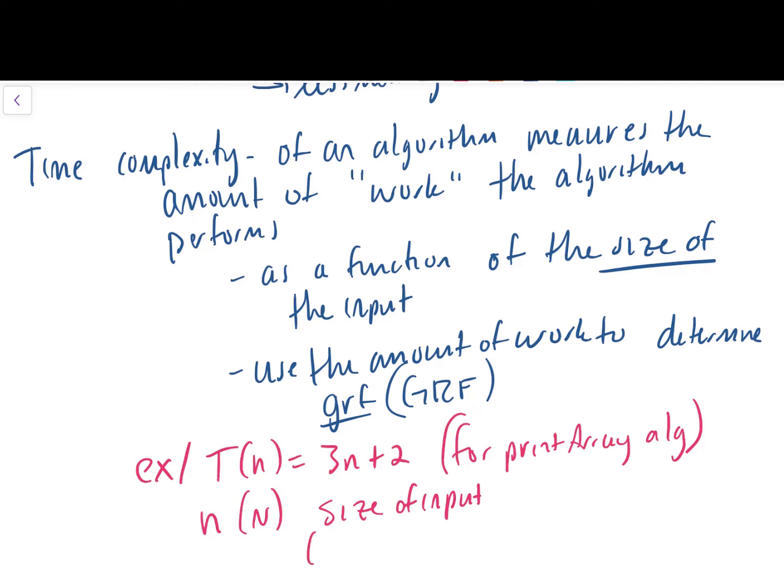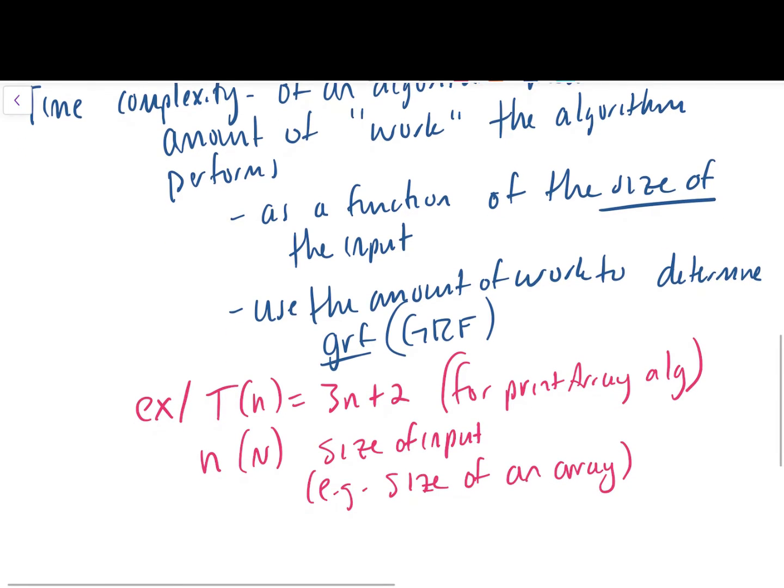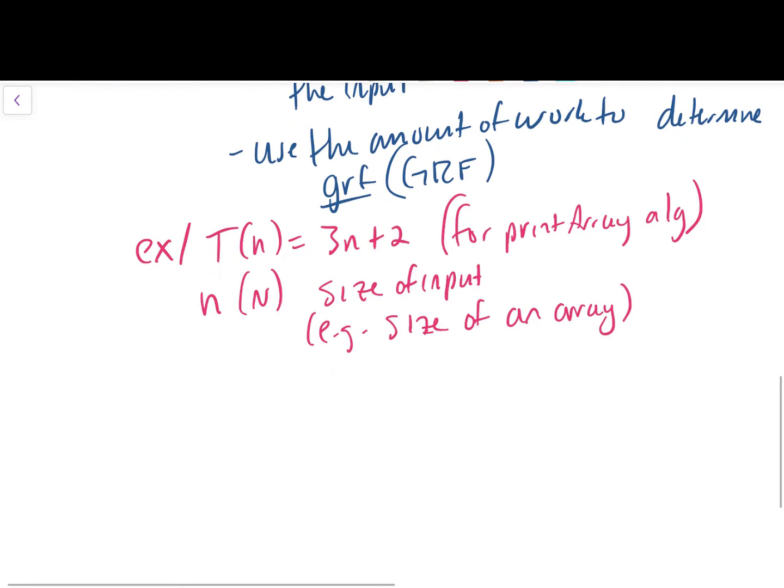This part here is really important because, of course, our algorithm will do more work if its input is larger. So we're not just going to have a time complexity that works possibly for all size of input. We'll have to express our time complexity in terms of the size of the input. So we'll use the amount of work to determine this function, which is called a growth rate function.